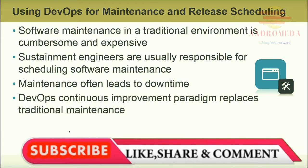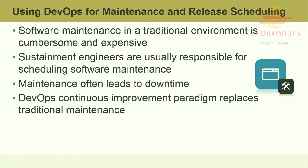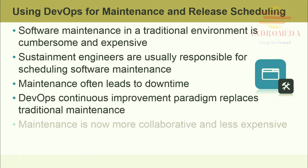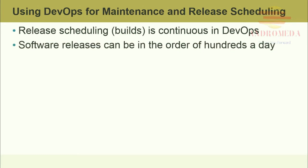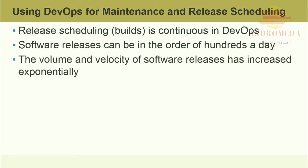The DevOps continuous improvement paradigm replaces traditional maintenance. If applications are continuously integrated, there's no longer a need for a maintenance stage — maintenance is now more collaborative and less expensive. Release scheduling, or builds, is continuous in DevOps. Software releases can be in the order of hundreds a day, while most traditional organizations may deploy an application every few months or even years. The volume and velocity of software releases has increased exponentially.